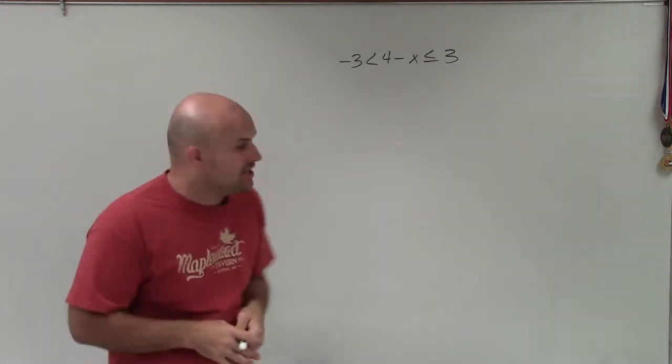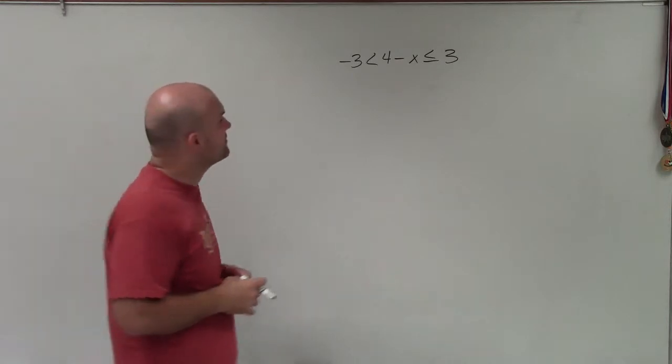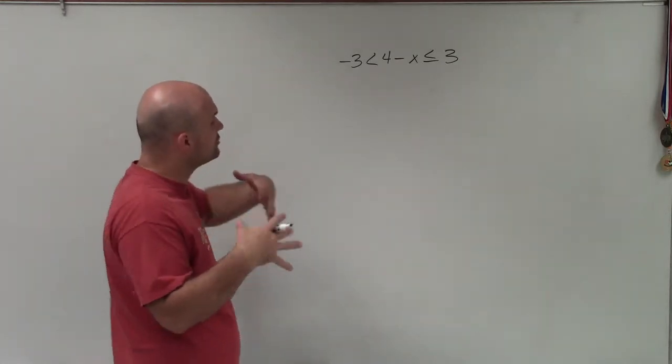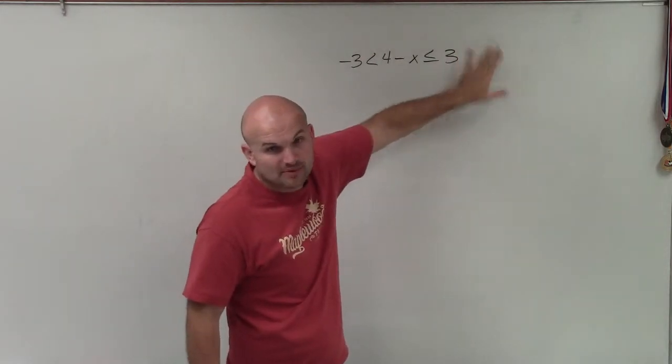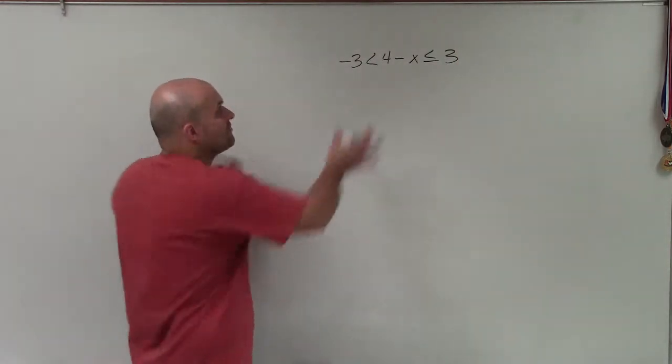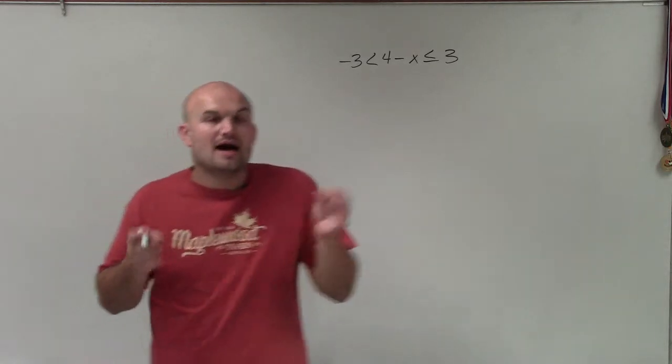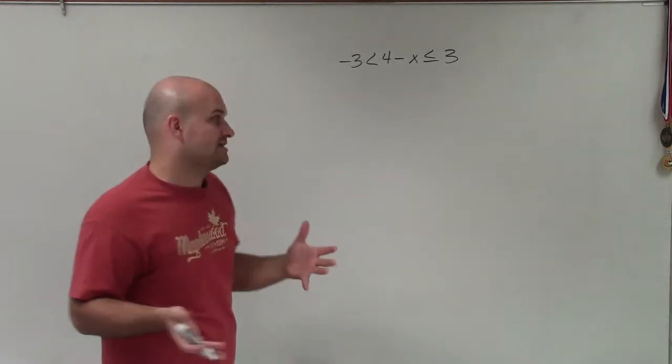So we're going to be looking for the intersection of our two solutions. So one way we could do is cover up each end and then solve the inequality separately. The other way, we could also just solve directly from here by using our properties of equality on both sides of each inequality sign.